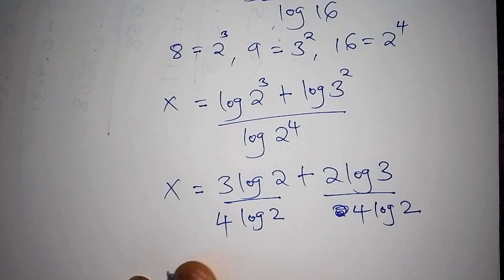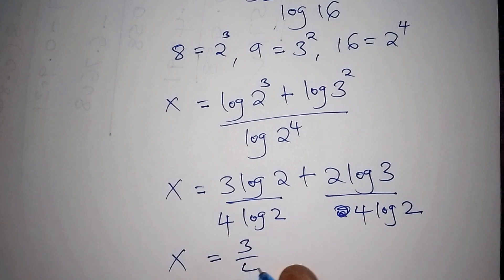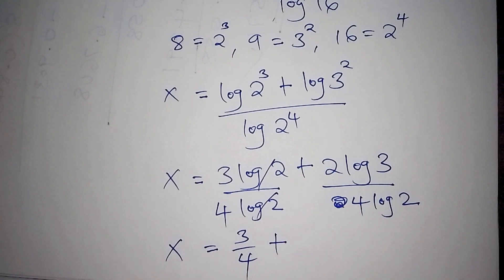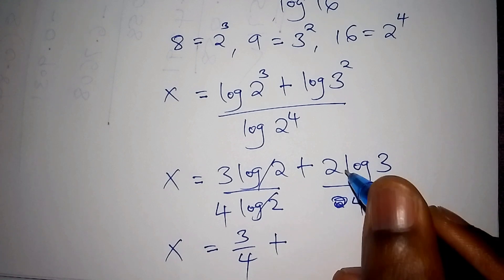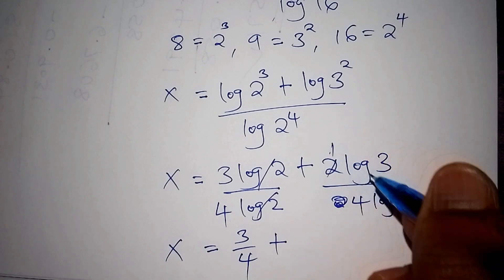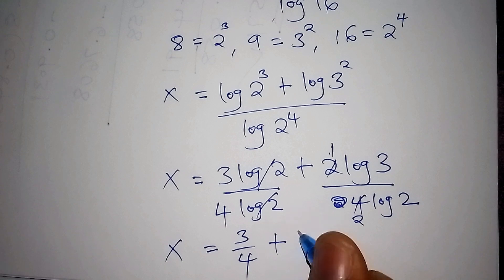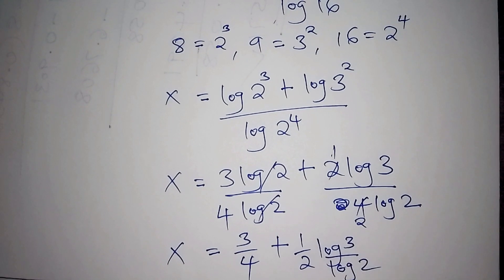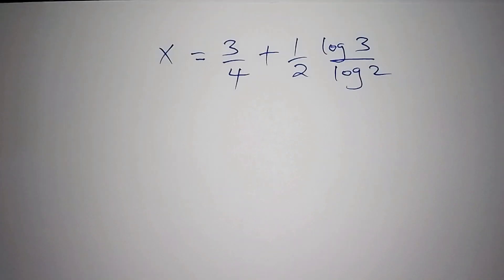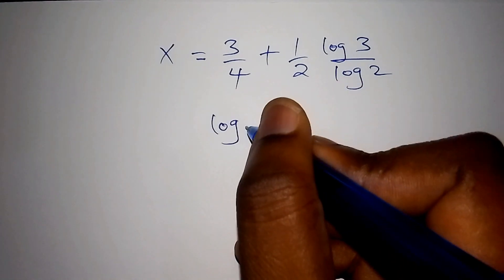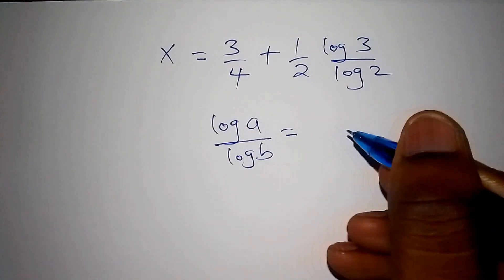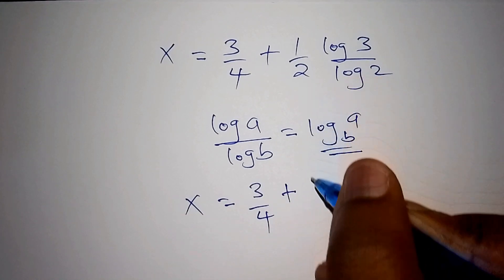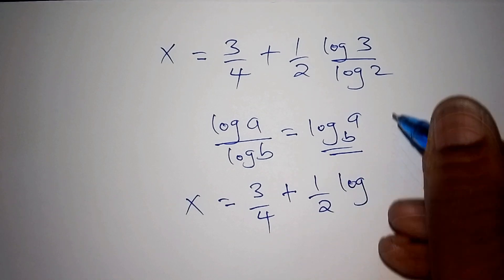So x is equals to 3 over 4 — the log 2 and log 2 cancel — plus 2 over 4, which simplifies to 1 half, times log 3 over log 2. Applying the change of base formula, log a over log b equals log base b of a, so our x equals 3 over 4 plus 1 half times log base 2 of 3.